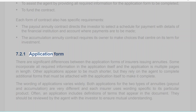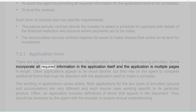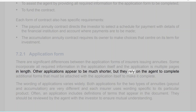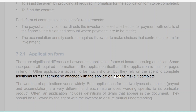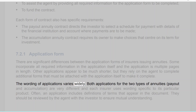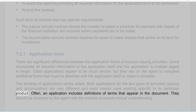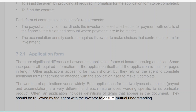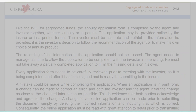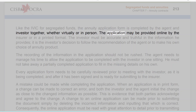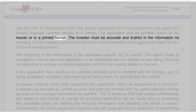Section 7.2.1: Application form. There are significant differences between the application forms of insurers issuing annuities. Some incorporate all required information in the application itself, making it multiple pages in length. Others appear shorter but rely on the agent to complete additional forms that must be attached to make the application complete. The wording of applications varies widely, and both payout and accumulation annuity applications are very different from each other. Often an application includes definitions of terms that appear in the document, which should be reviewed by the agent with the investor to ensure mutual understanding.